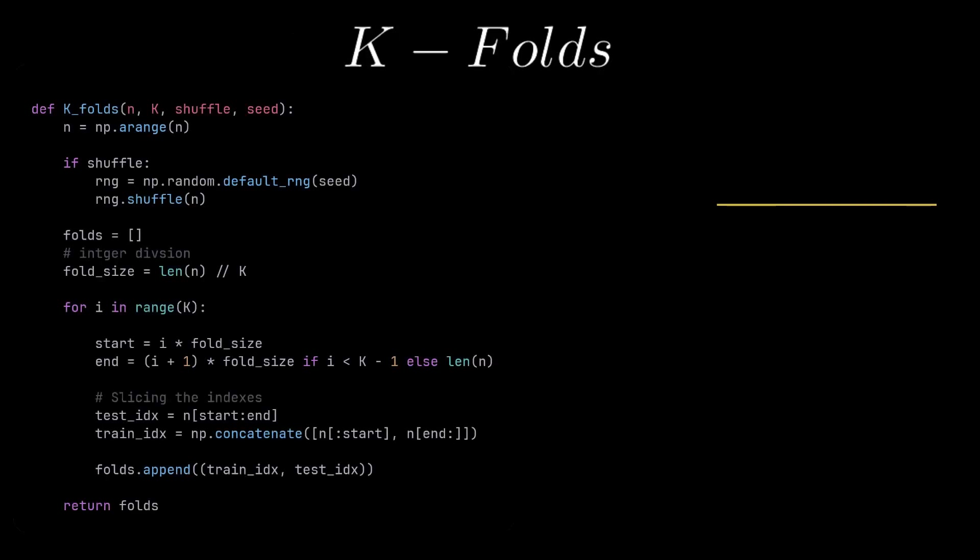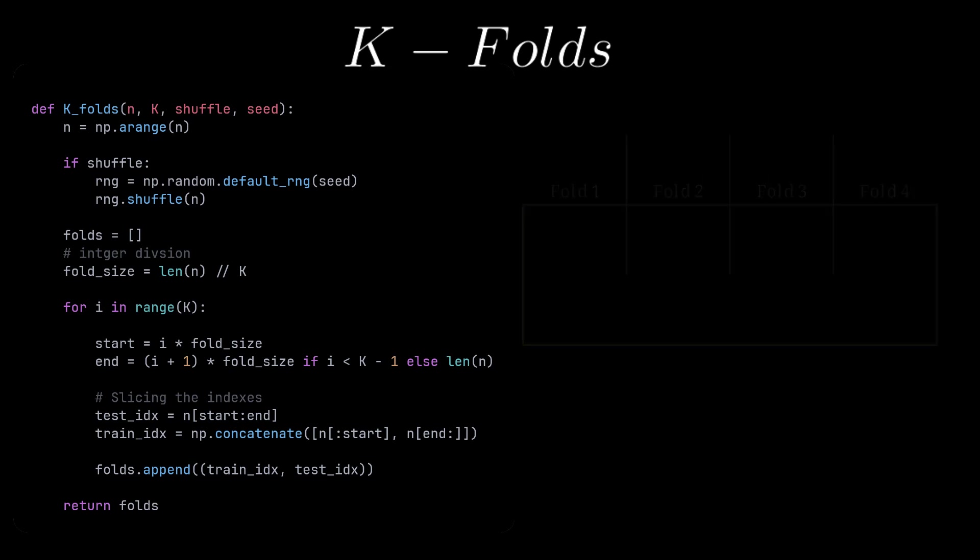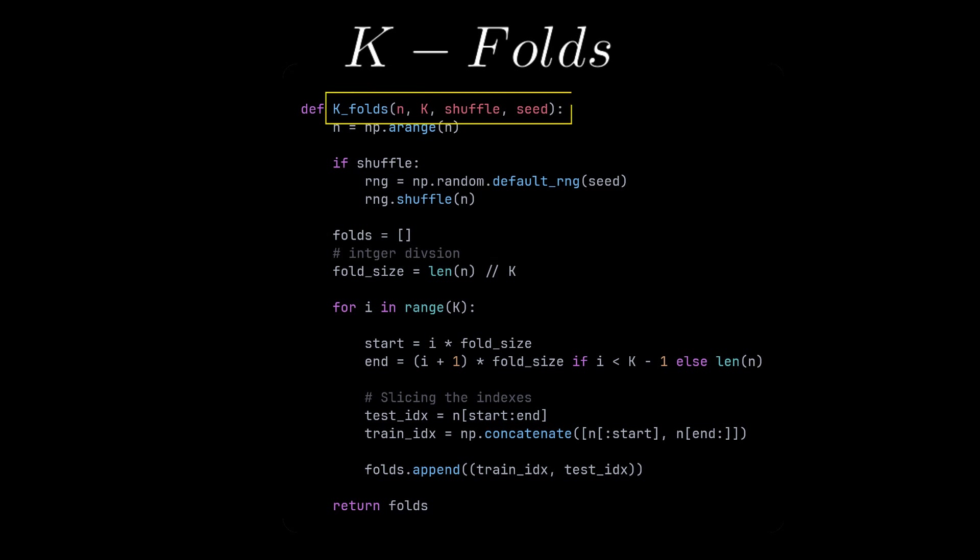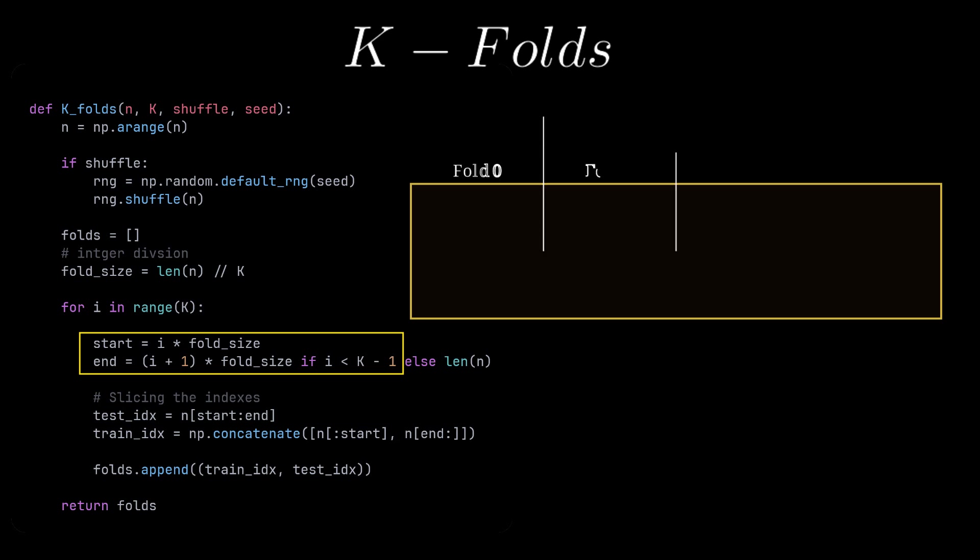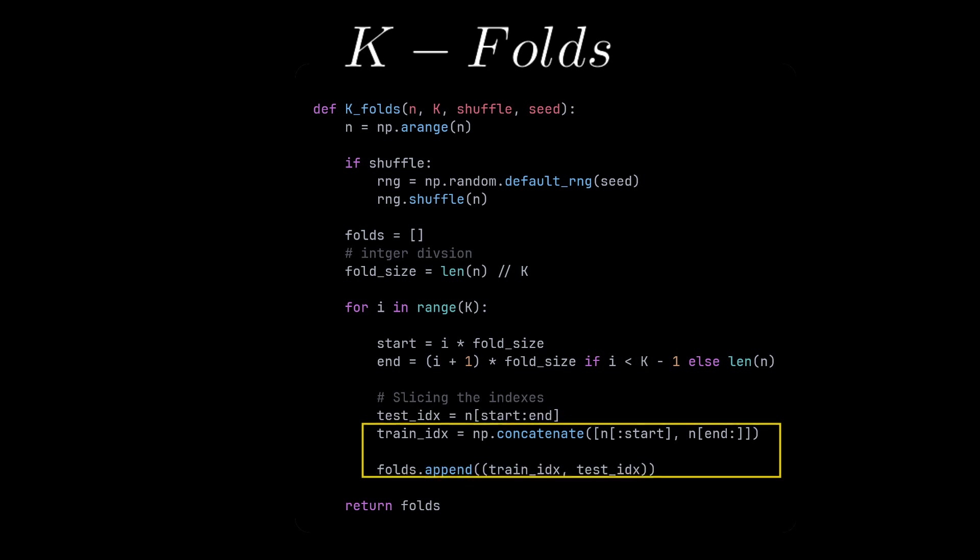Now let's implement cross-validation. First, we need a helper function to split the data into folds and make the logic clear. This function takes k number of folds and n number of observations. We calculate the size of each fold by doing integer division. And then we loop k times and calculate inside it the start and the end indices for that one validation fold. We slice the test index from the start and the end, and the rest becomes the train index. We repeat it k times so that each fold takes a turn on being the validation fold. Finally, we append both the train and test indices into the folds list.